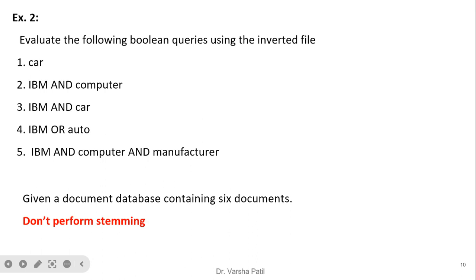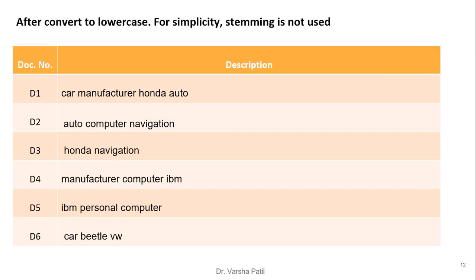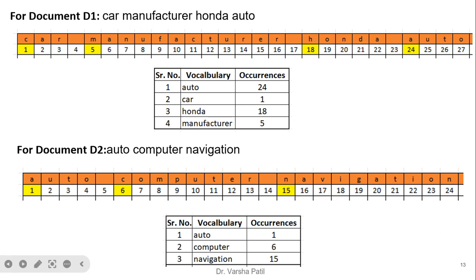Exercise 2: six documents are given. For simplicity, documents are very small in size. The instruction is given not to perform the stemming, so we are not performing the stemming step here. Same as the previous problem, for document D1 — car, manufacturer, honda, auto — we find the byte offset. Car, manufacturer, honda, and auto, with their respective locations stored in the occurrence list. Every word occurs once, so there is no repetition of occurrences.